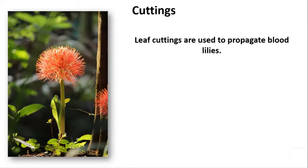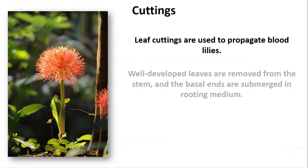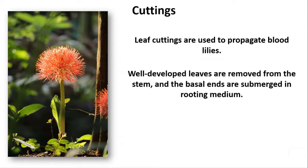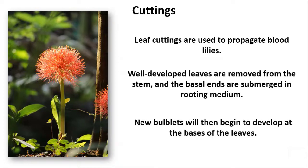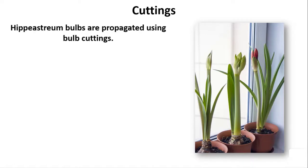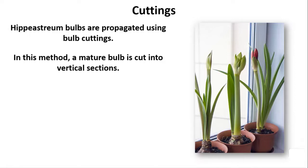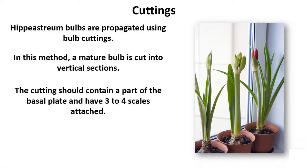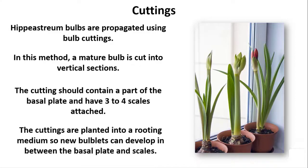Leaf cuttings are used to propagate blood lilies. Well-developed leaves are removed from the stem, and the basal ends are submerged in rooting medium. New bulblets will then begin to develop at the bases of the leaves. Hippeastrum bulbs are propagated using bulb cuttings. In this method, a mature bulb is cut into vertical sections. The cutting should contain a part of the basal plate and have three to four scales attached. The cuttings are planted into a rooting medium so new bulblets can develop in between the basal plate and scales.